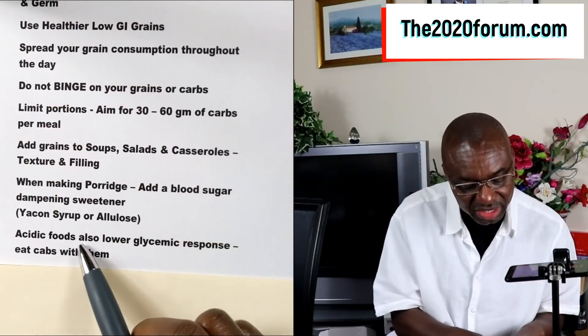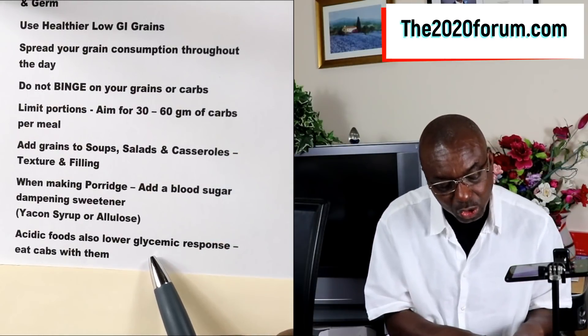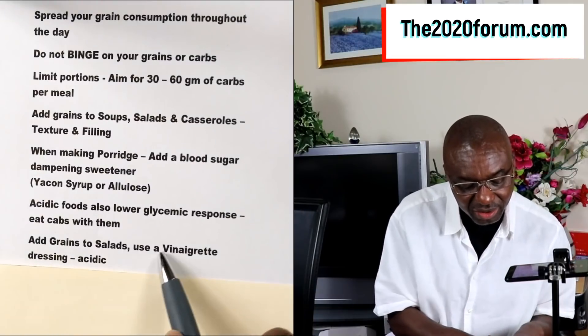Related to that tip: you want to be eating your grains with acidic foods, because acidic foods tend to lower your glycemic response. Which leads to the next tip: if you are going to add your grains to salads, I will encourage you to use a vinaigrette dressing. Vinaigrettes are acidic by nature and will help slow down blood sugar absorption, stabilizing your blood sugar levels rather than causing a sudden spike.